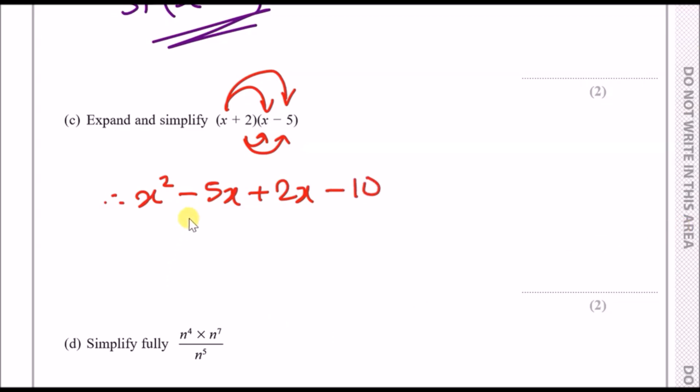So when you do that, x times x is x squared, x times minus 5 is minus 5x, 2 times x is plus 2x, and lastly 2 times minus 5 is minus 10. For these quadratics you always have to try and simplify the middle terms. This means that minus 5x plus 2x, if you just put minus 5 plus 2 in your calculator you should get minus 3x.